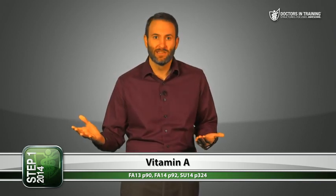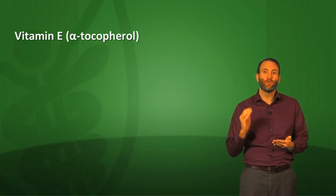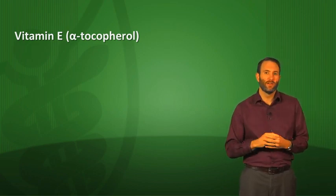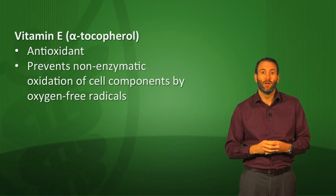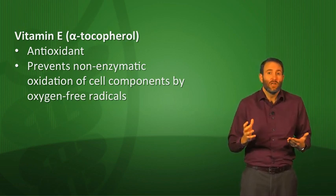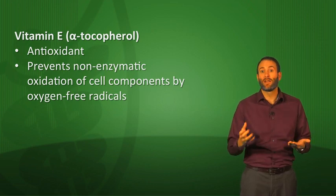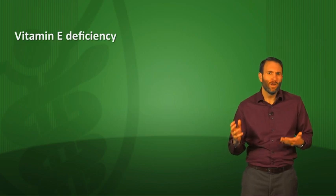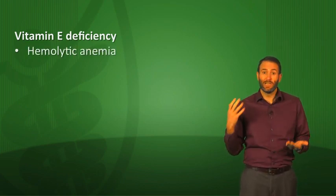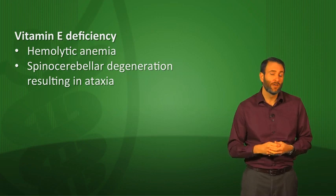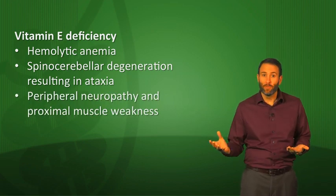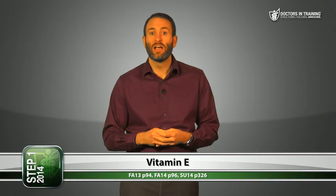Moving on — vitamin E, also known as alpha-tocopherol. Its primary function is as an antioxidant: it prevents non-enzymatic oxidation of cell components by oxygen-free radicals. It's especially important for red blood cells, helping prevent free radicals from damaging RBCs and other cells. Vitamin E deficiency is associated with hemolytic anemia due to less protection for RBCs, spinal cerebellar degeneration resulting in ataxia, peripheral neuropathy, and proximal muscle weakness. So that covers our fat-soluble vitamins: D, K, A, and E — remember ADEK.